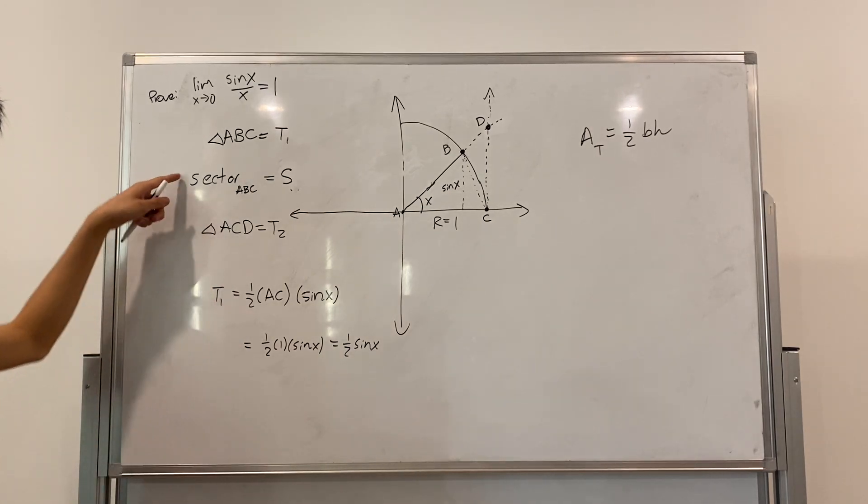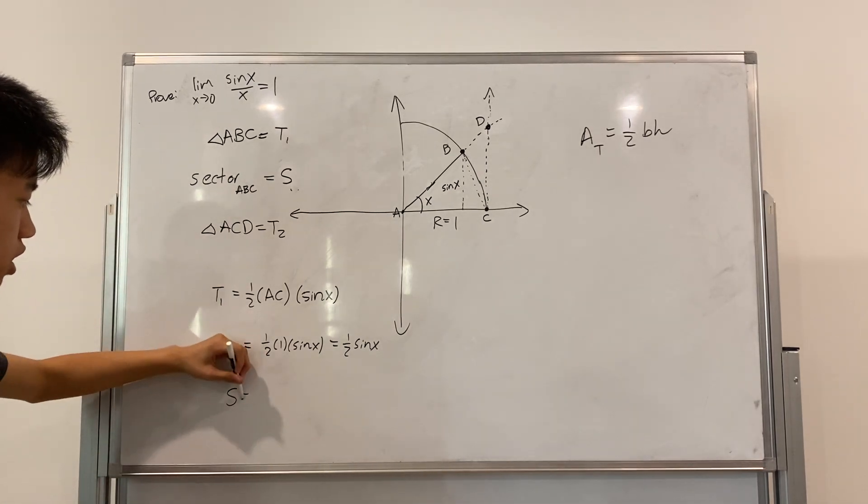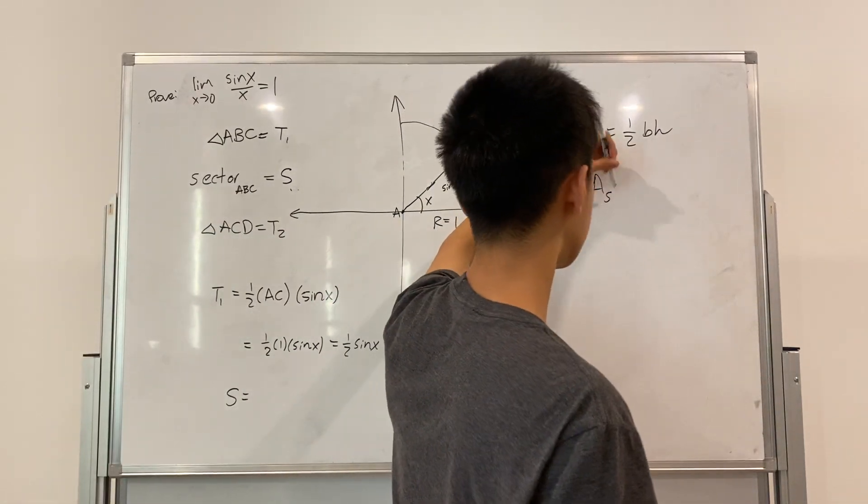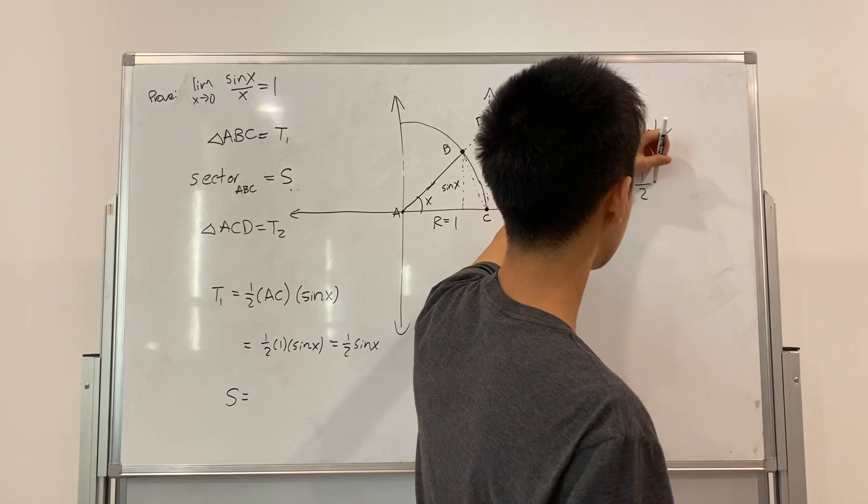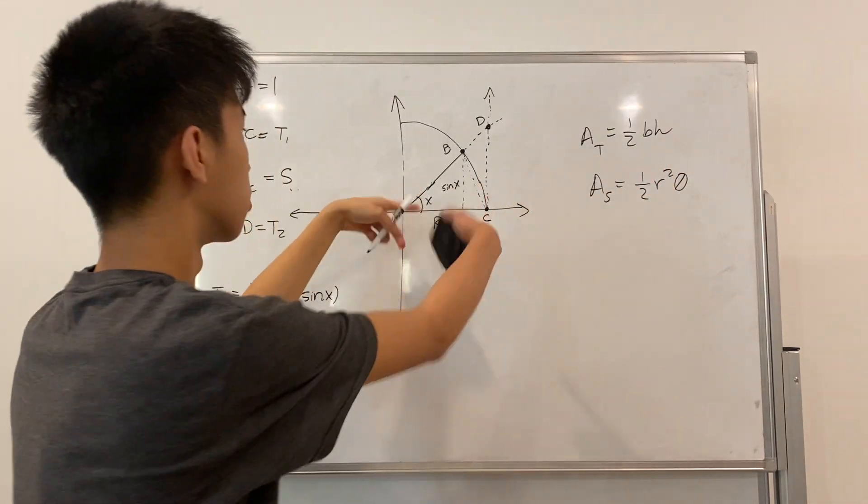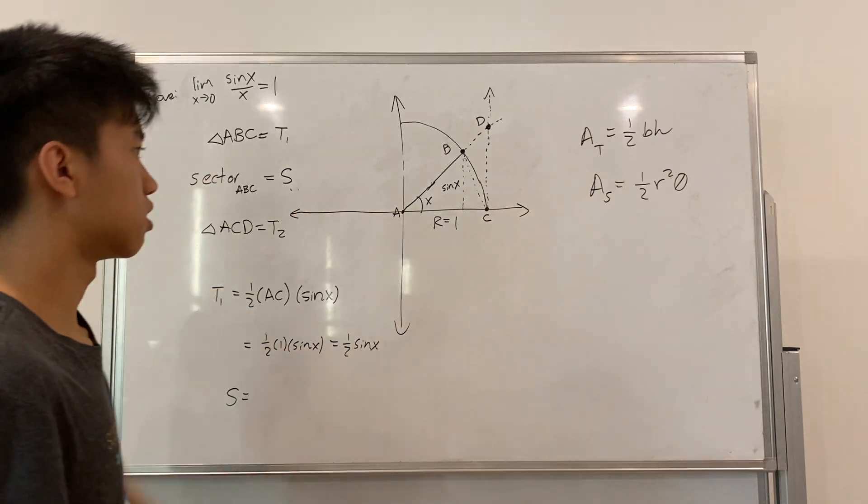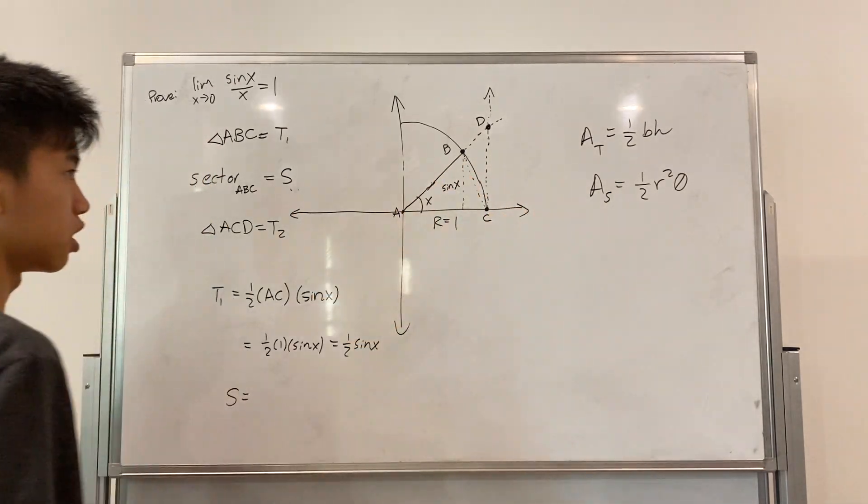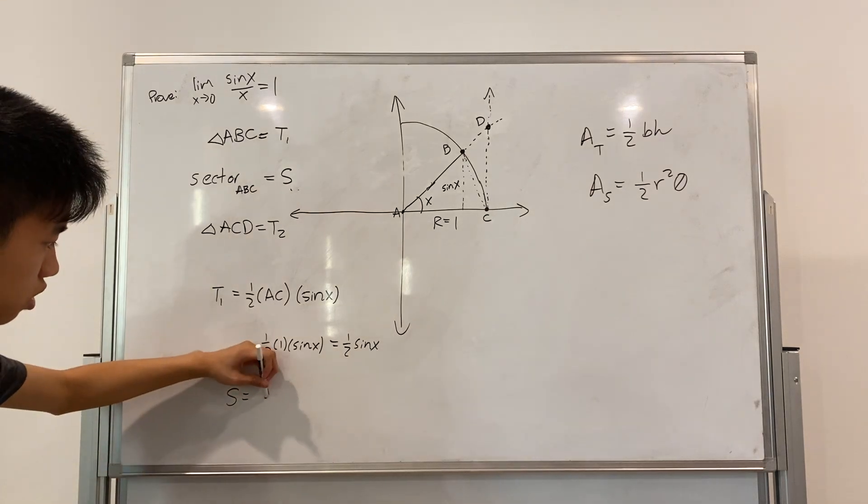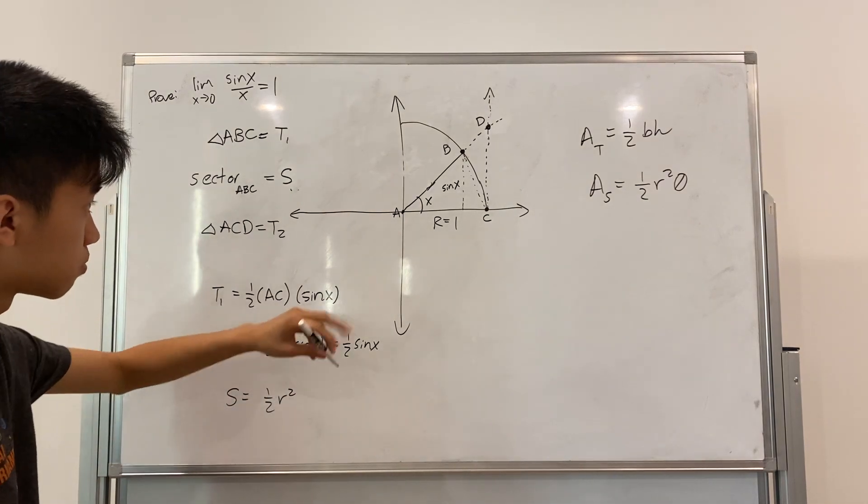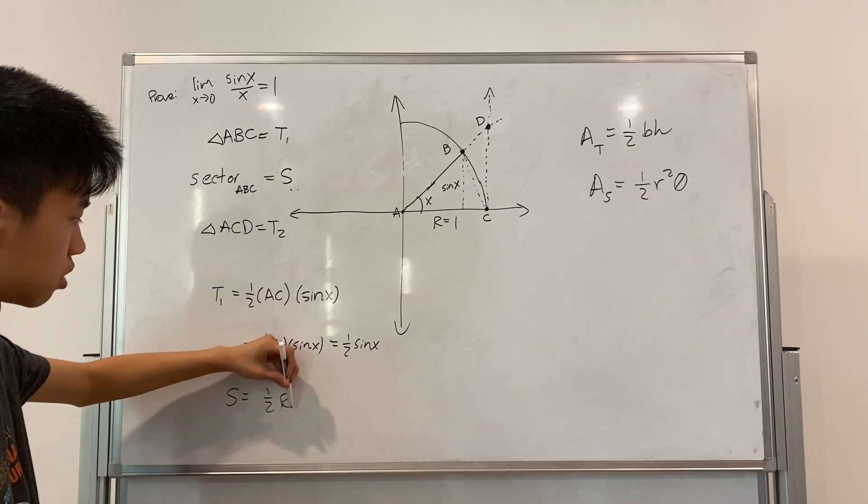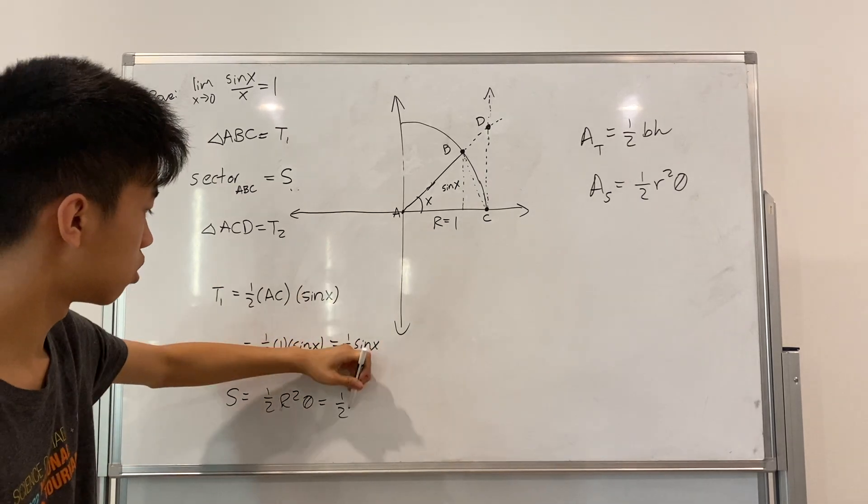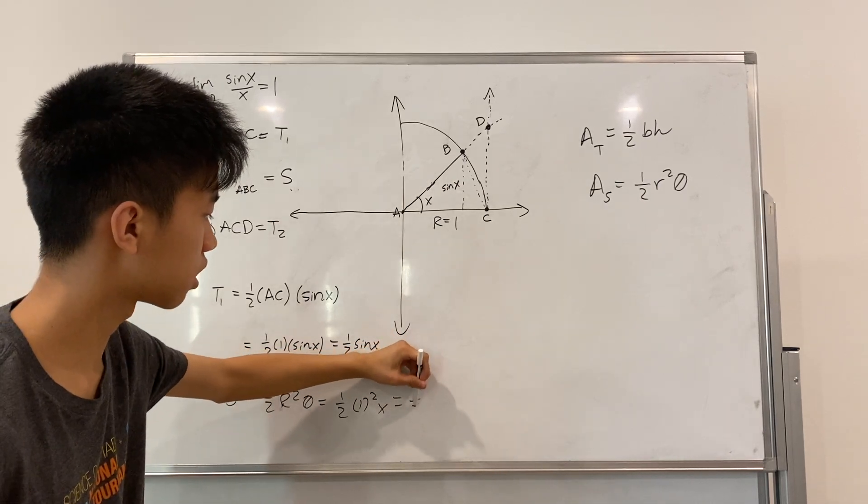Now let's get to S. What is S? Well, we know that the area of a sector is equal to one half R squared theta. Since it's uniform here, the area is uniform, there's no function, we're just finding simply the area. So, that's one half R squared, theta. That's equal to one half, one squared X, or one half X.